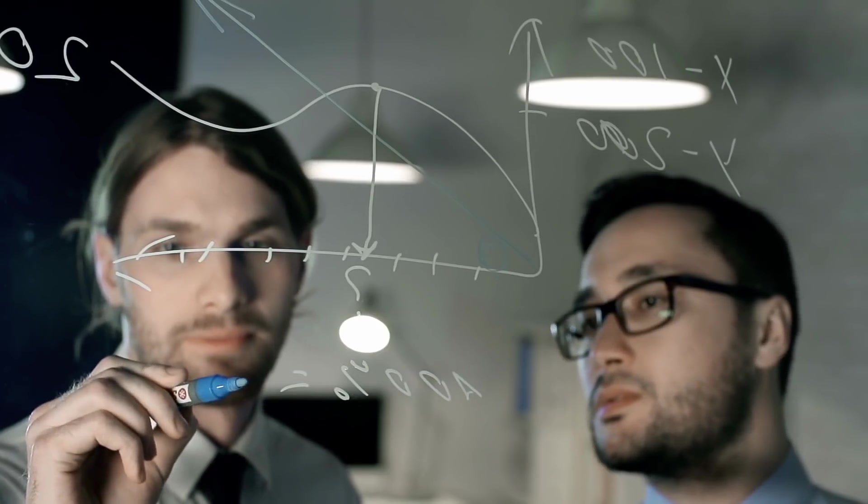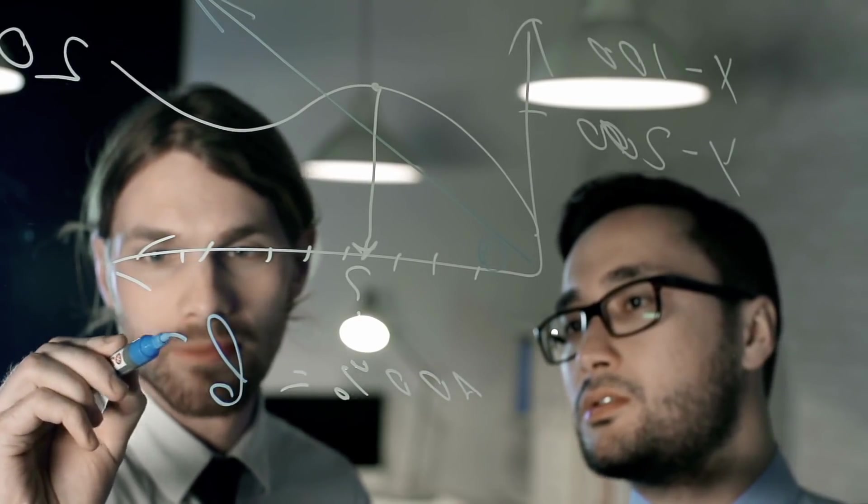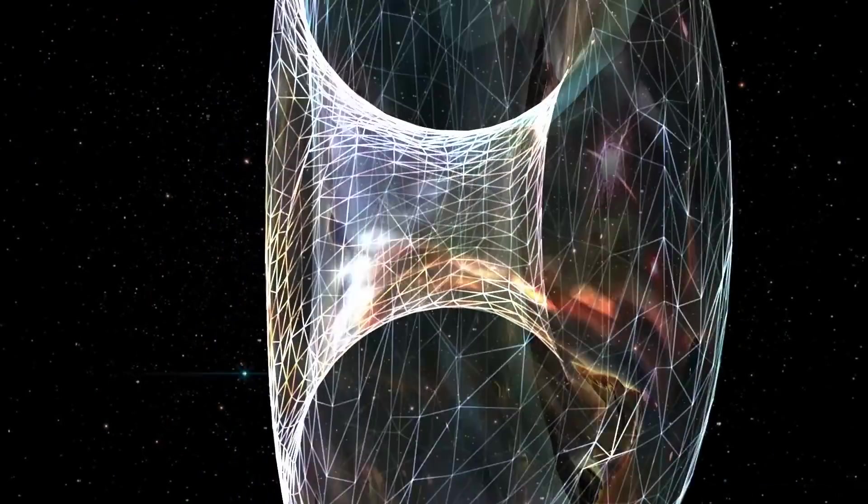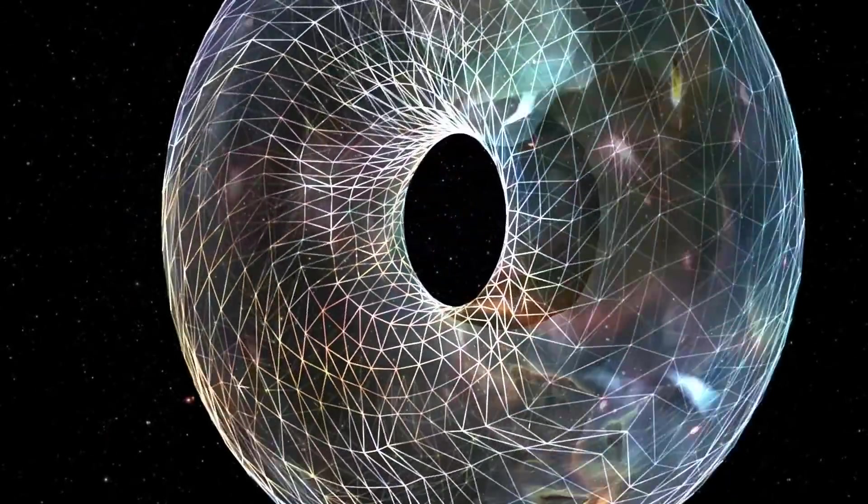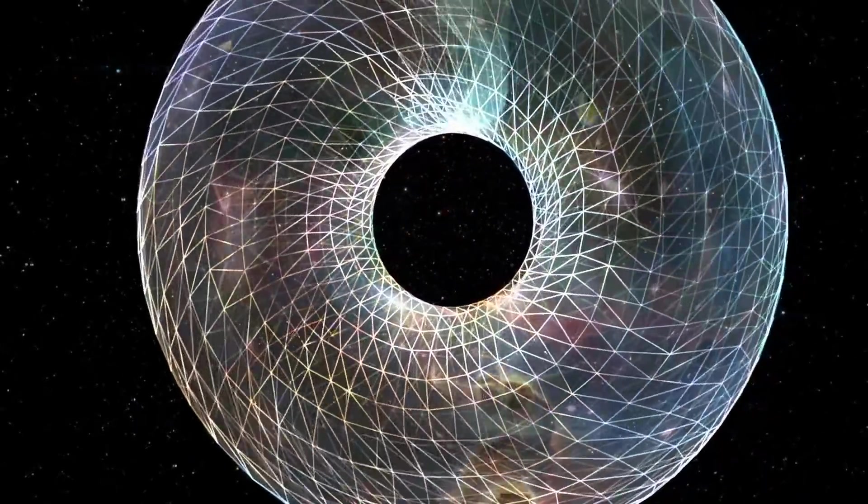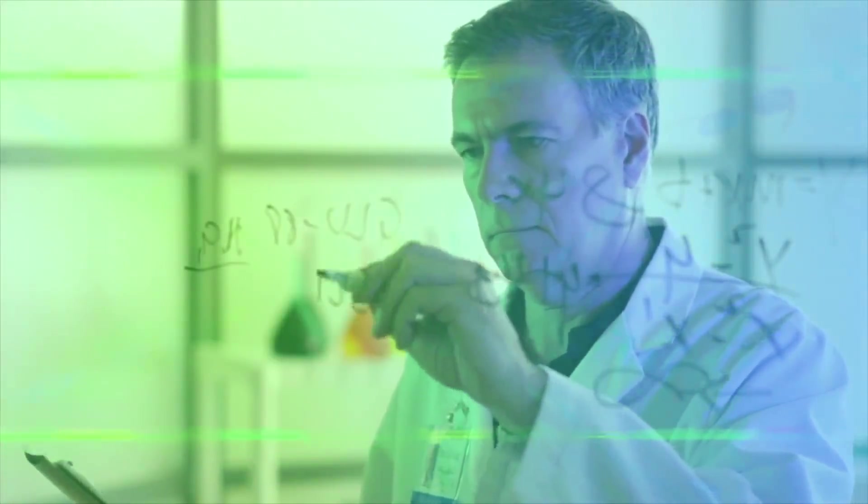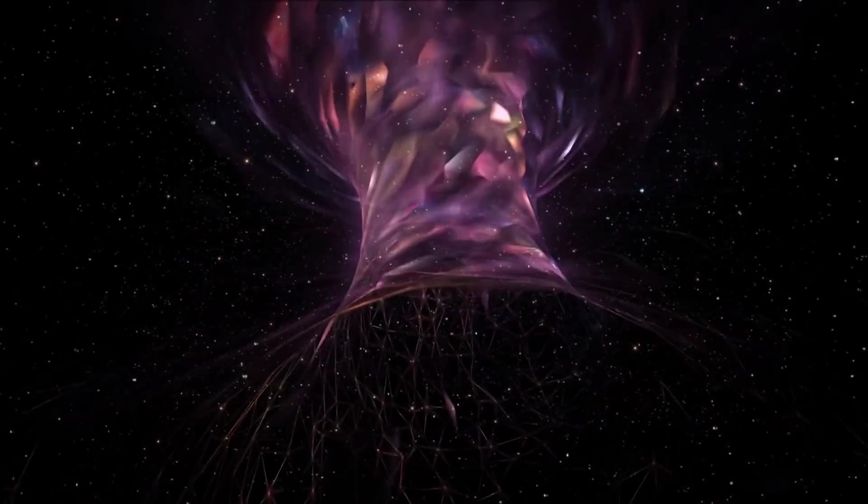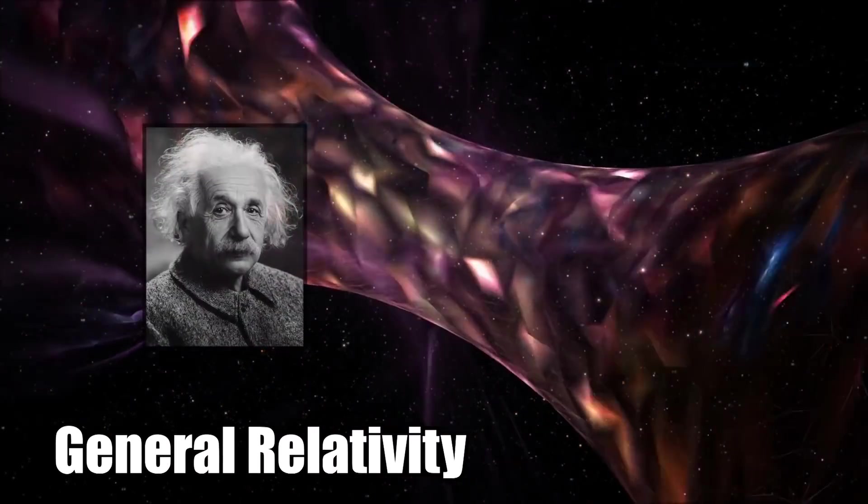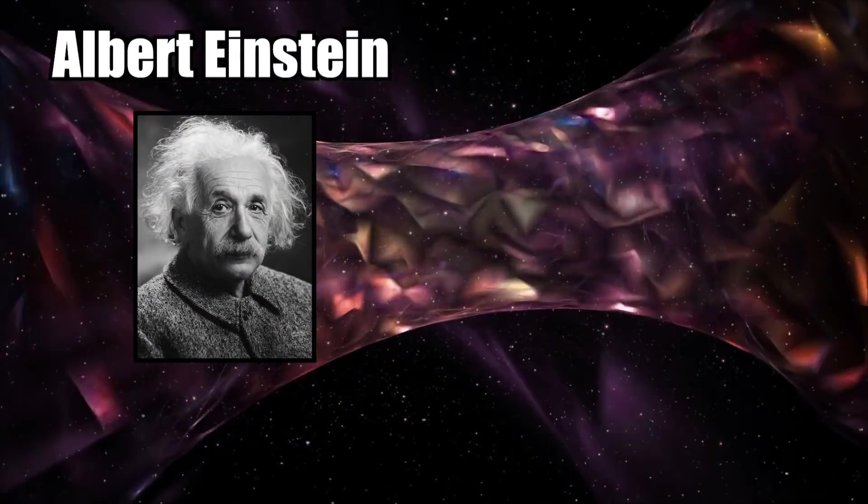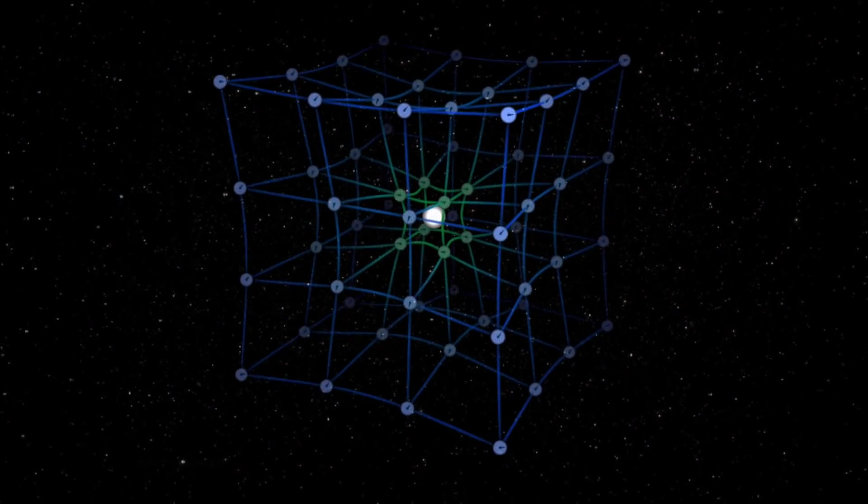Experts don't know if wormholes actually exist, but they think it's possible. One major problem with the theory is that until recently, it seemed as though wormholes would instantly collapse, based on the laws of mathematics that are used to explain them. These laws, known as general relativity, are based on Albert Einstein's understanding of how gravity affects the fabric of space-time.